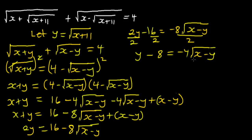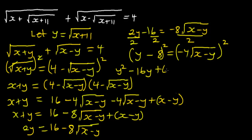Now we are going to square both sides again. Squaring both sides, the left gives Y squared minus 16Y plus 64, and the right gives 16 times X minus Y.